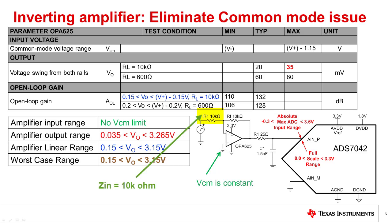One limitation of this circuit is that the input impedance is equal to the gain setting resistor, which is 10 kilohms in this example. The non-inverting amplifier base circuit, on the other hand, has an extremely high input impedance, often greater than 100 megaohms. Furthermore, the inverting configuration has a gain error associated with the feedback resistors, whereas the non-inverting buffer amplifier has an extremely small gain error.